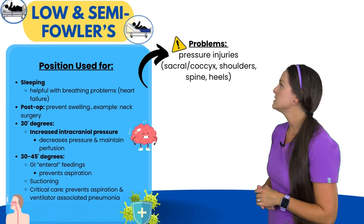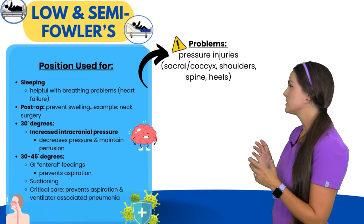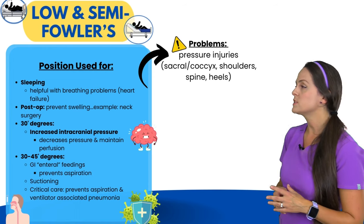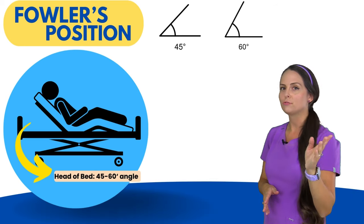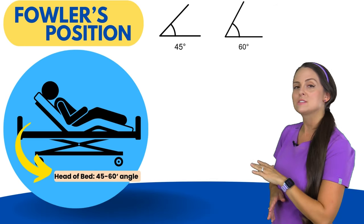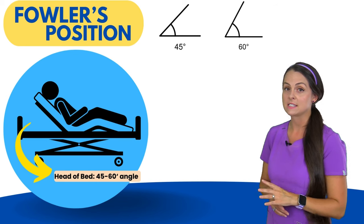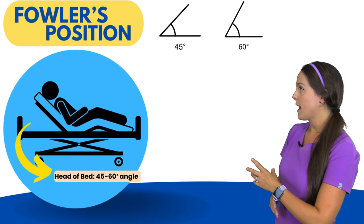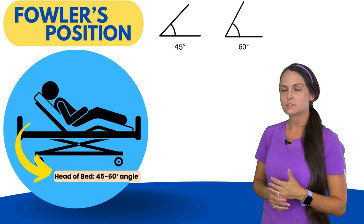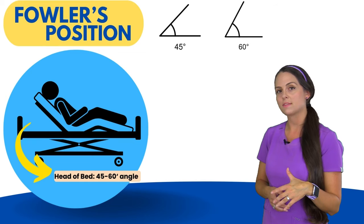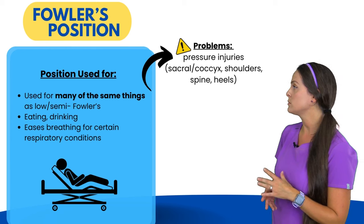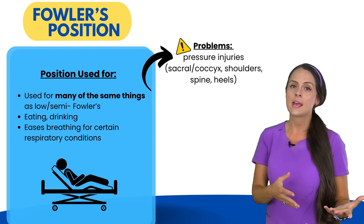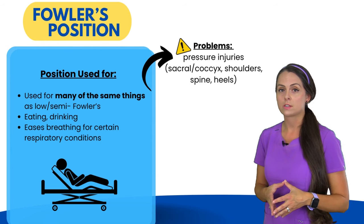Problems associated with these Fowler's positions include pressure injuries — particularly to the sacral area, coccyx, shoulder, spine, and heels. Next we have the Fowler's position, which is just called Fowler's with no low, semi, or high in front of it. This is where the head of the bed is between 45 to 60 degrees. The patient rests on their back with knees flexed or extended, similar to low and semi Fowler's but with the head of the bed a little higher. This position is used for eating, drinking, and easing breathing with certain respiratory problems, and the associated pressure injury risks are the same.